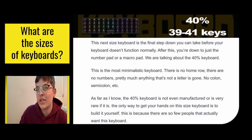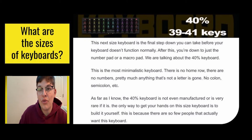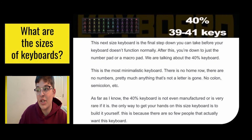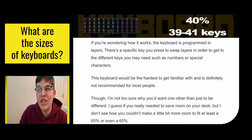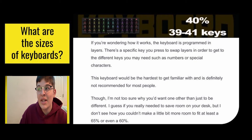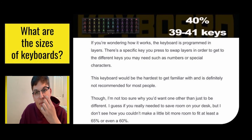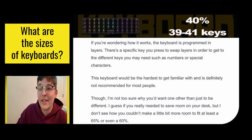Next is the 40% keyboard — it has 30 to 41 keys and is the final step down before your keyboard does not function normally. After this, you're just down to the number pad or a macro pad. This is the most minimalistic keyboard — there's no home row, there are no numbers, and pretty much anything that's not a letter is gone. As far as I know, the 40% keyboard is not manufactured or is very rare. The only way to get one is to build it yourself or buy it from someone who builds them. The keyboard is programmed in layers, and there's a specific key you press to swap layers to get keys like numbers or special characters. This keyboard is the hardest to get familiar with and is definitely not recommended for most people.